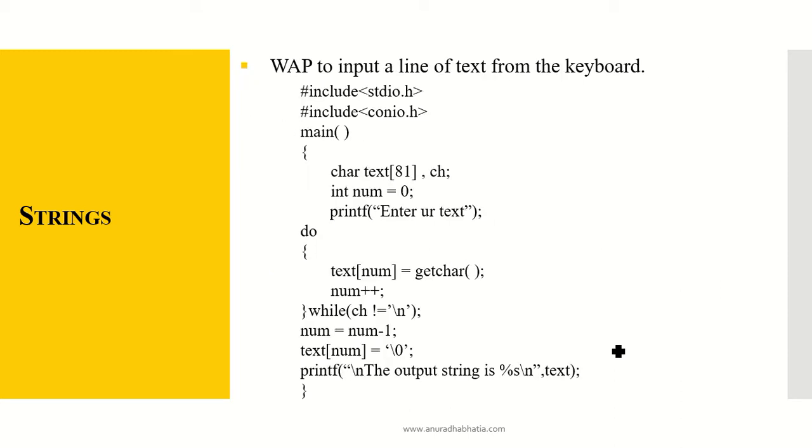Let's see an example. Write a program to input a line of text from the keyboard. Hash include stdio.h, hash include conio.h, main character text[81].